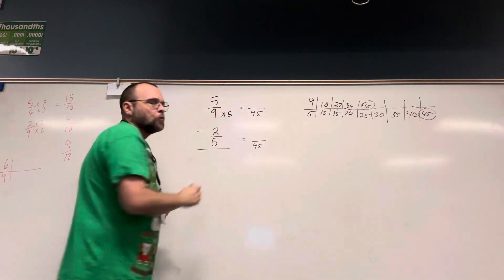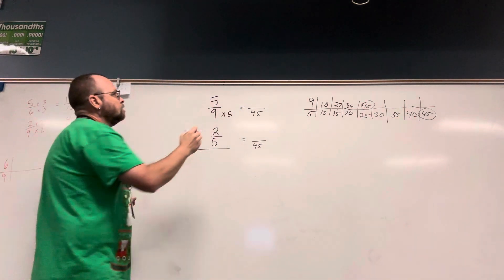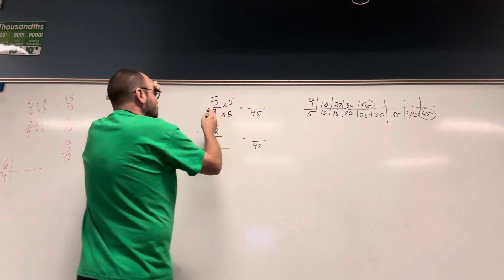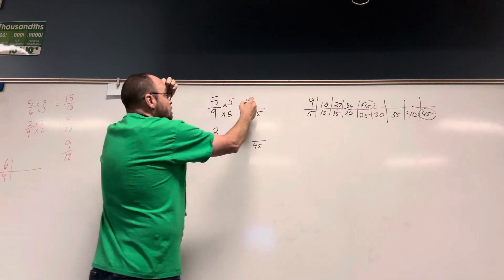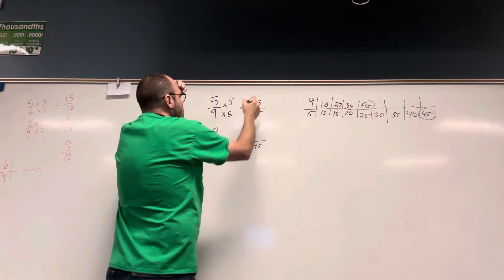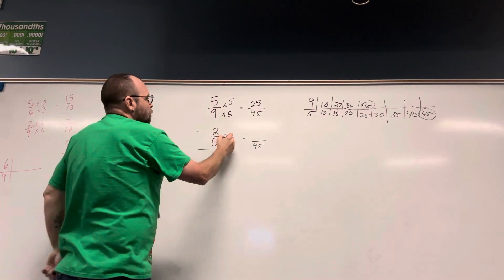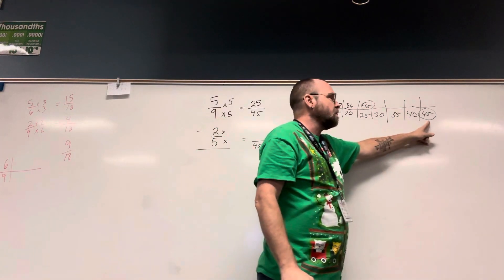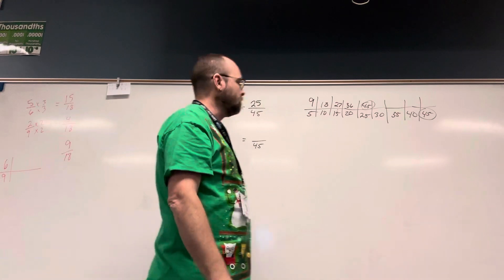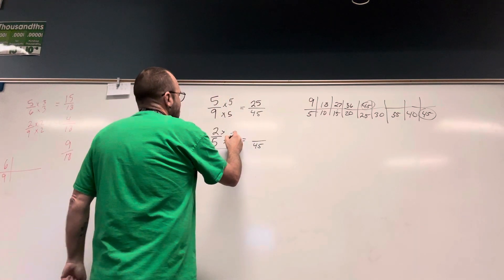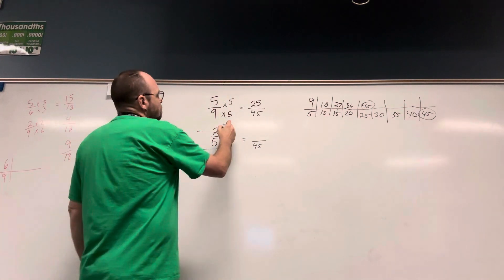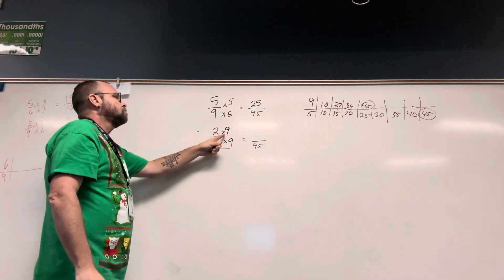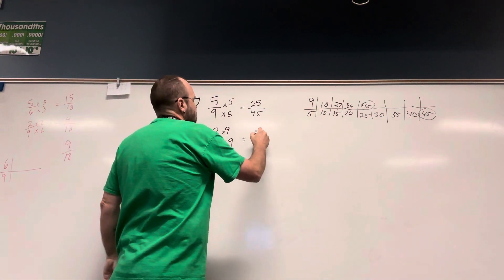So if I multiply the denominator by 5, I also have to multiply the numerator by 5. And 5 times 5 is 25. 5 times 9 gives me 45, so if I multiply my denominator by 9, I must also multiply my numerator by 9. And 2 times 9 is 18.